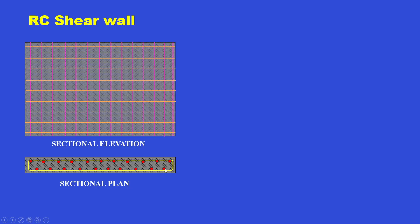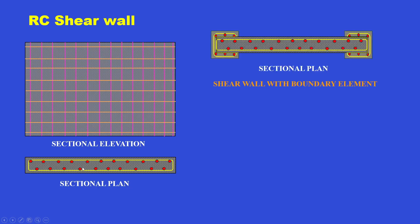The section shows the wall without any boundary element. What a boundary element is can be illustrated in this figure — at the two ends of the wall we have placed column-like sections called boundary elements, which enhance the performance and strengthen the wall.